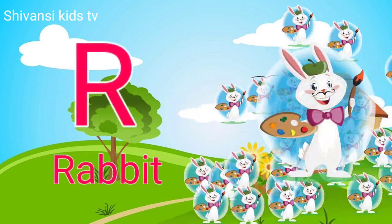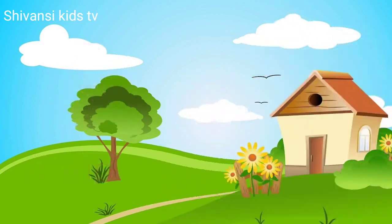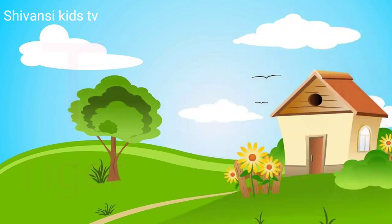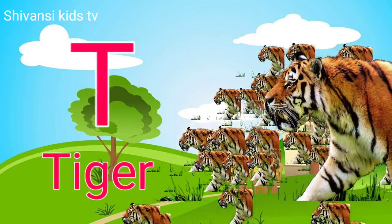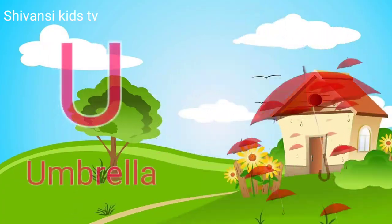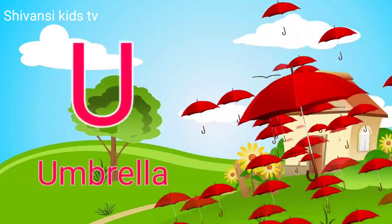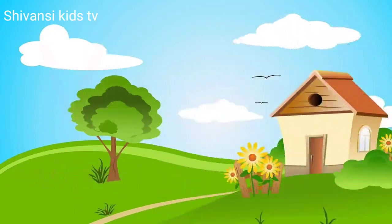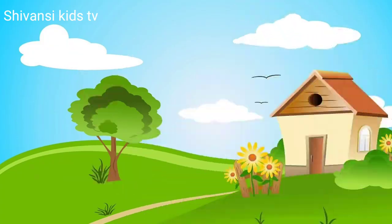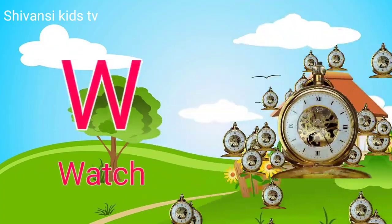R for rabbit, S for sheep, T for tiger, U for umbrella, V for van.